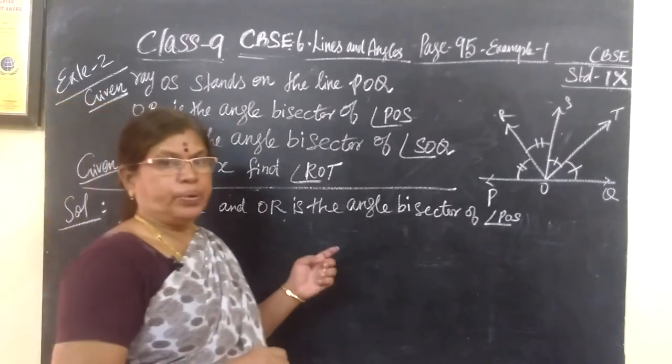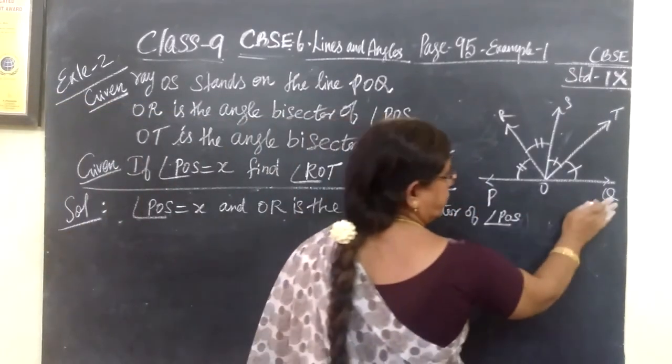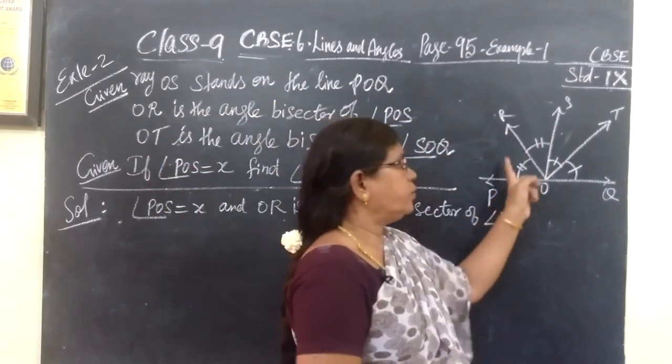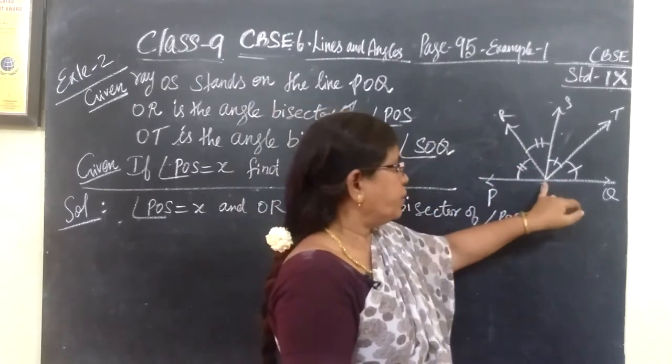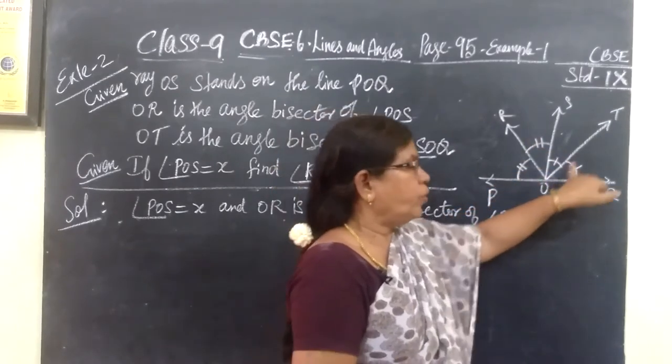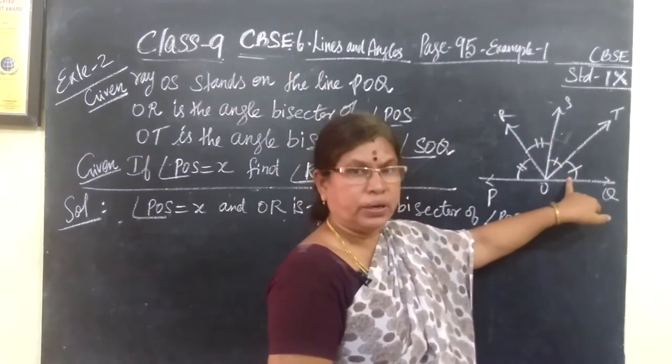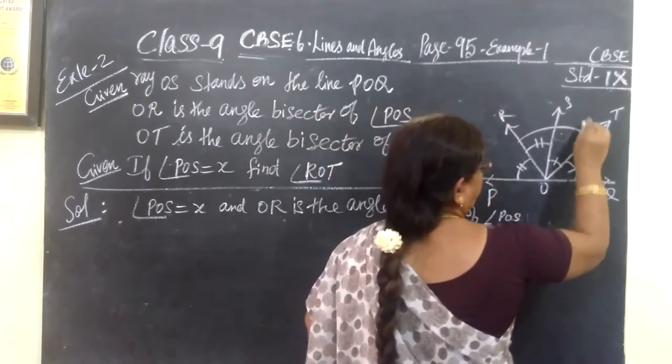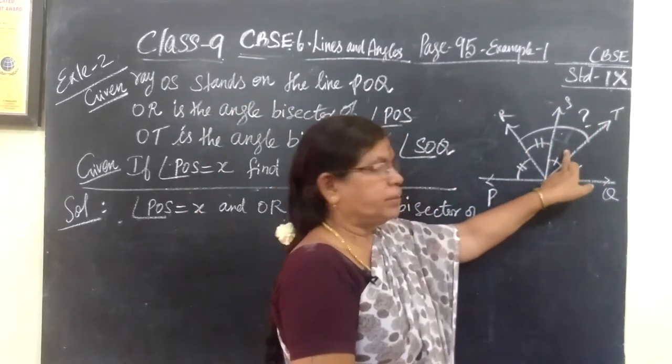So now we see example 2. You are given POQ is a straight line and all these are angles. This means these two angles are equal. OR is the angle bisector. Angle bisector means these two angles are equal, so we are using this symbol. And OT is the angle bisector of this full angle, so these two angles are equal. You want to find ROT. ROT is the question mark. That means you have to add this angle and this angle.